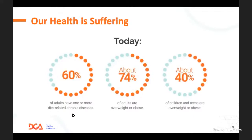Turning to current health status: as part of the data analysis, in addition to looking at what people eat, we did an assessment of health status. About 60% of Americans currently have at least one or more diet-related diseases. About three-quarters of Americans are overweight or obese, and about 40% of children and teens are overweight or obese. We have big problems to solve.